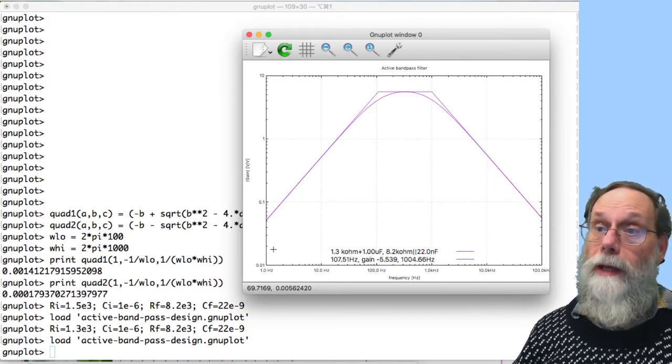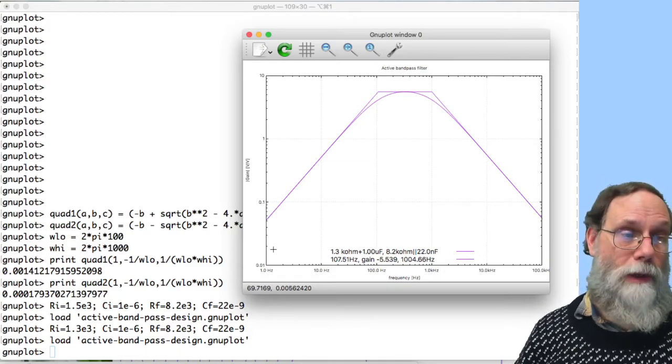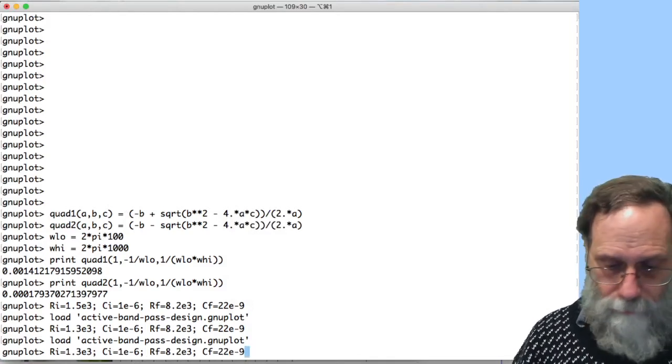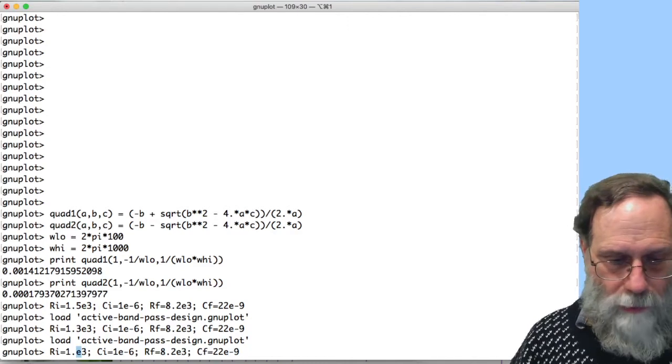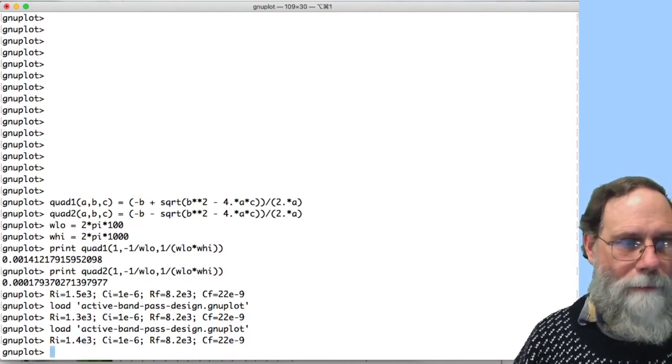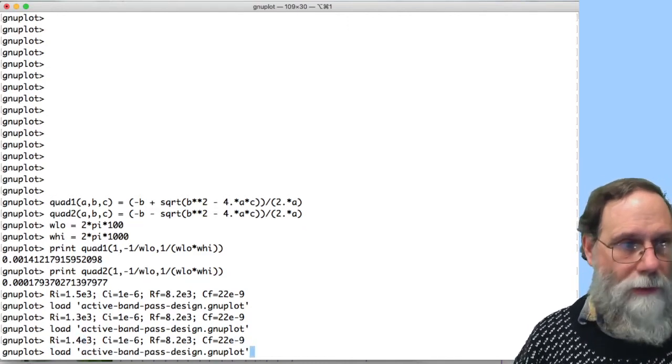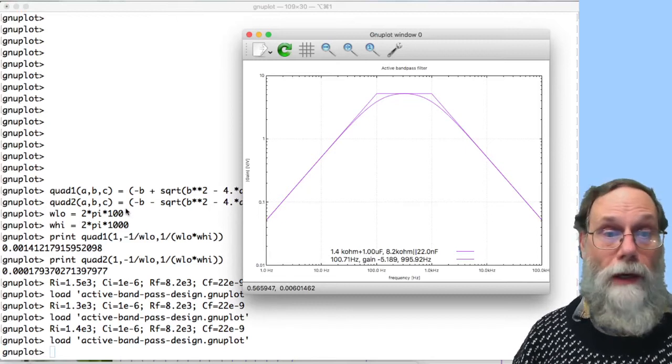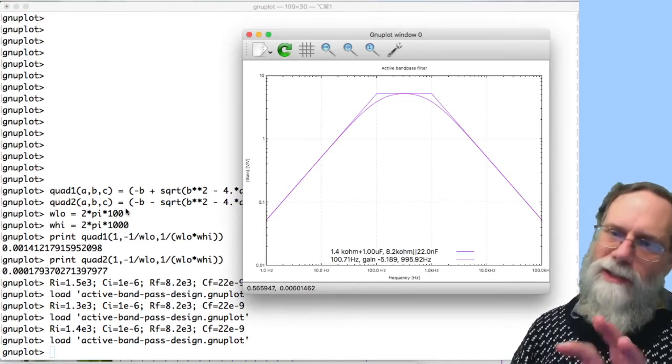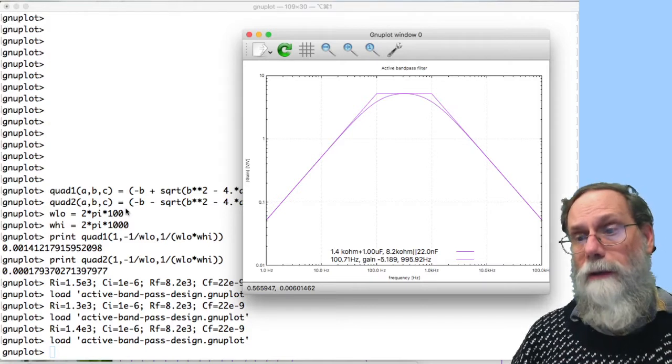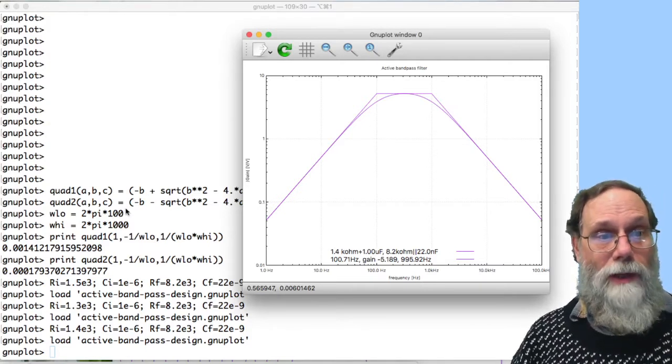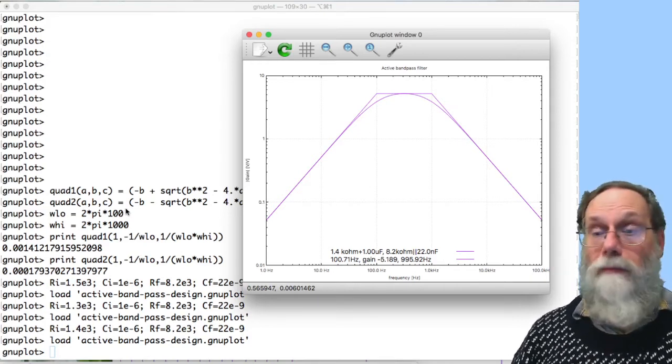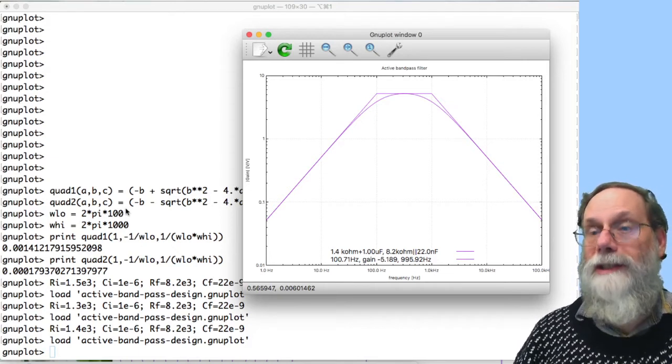Here's one that says we can get that gain to be higher rather than lower than minus five. And here we've got our corner frequency is a little bit better. 1004.66 is quite accurate on that corner frequency, and 107.51 is a little high. If we were allowed to use E48 resistors, we could have gone for 1.4 kilo ohms instead of 1.3. So let's see what that does. Now we've got 5.189. We're a little bit above 5, but not a lot above. The 995.9 hertz is still pretty good. That looks like quite a good match to the specs that we were given.